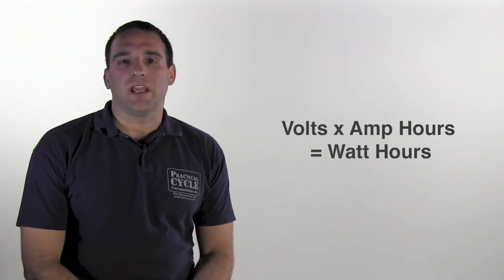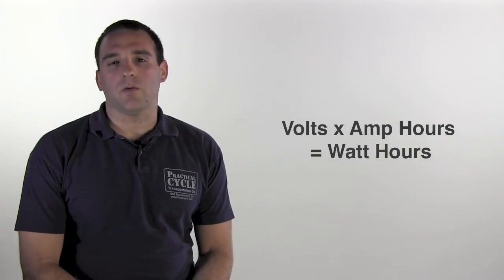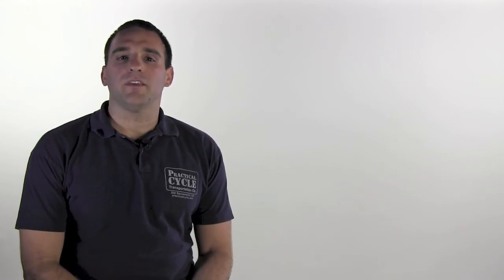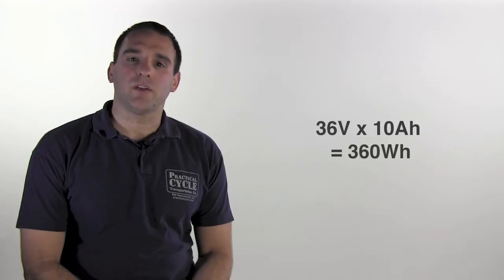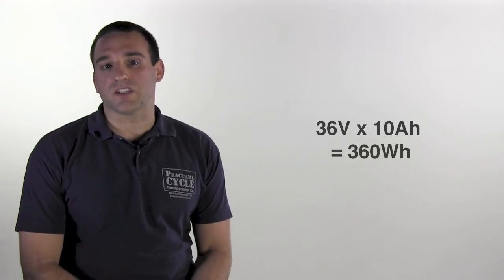All batteries have a voltage and amp hour rating. If you multiply the two together, you get watt hours, which is a measurement of the actual amount of energy stored in the battery. For example, the standard Pedago battery is 36 volts and 10 amp hours, which equals 360 watt hours.